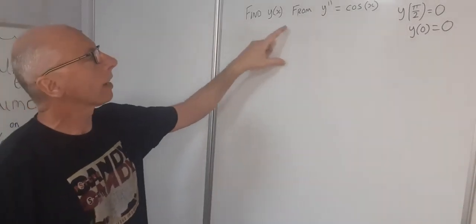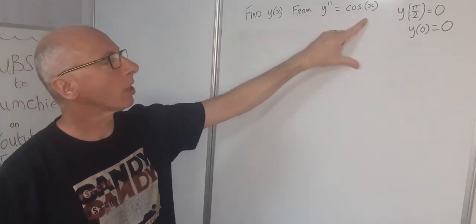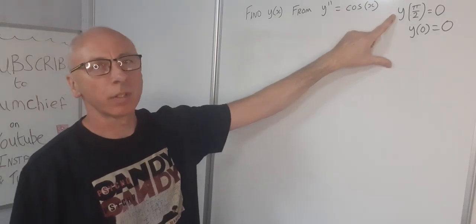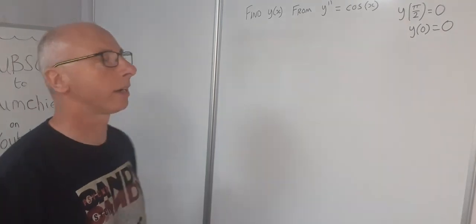We've been asked to find y of x from this equation: y double prime equals cosine of x. And we're given two boundary conditions here: y of pi over 2 is 0 and y of 0 is 0.